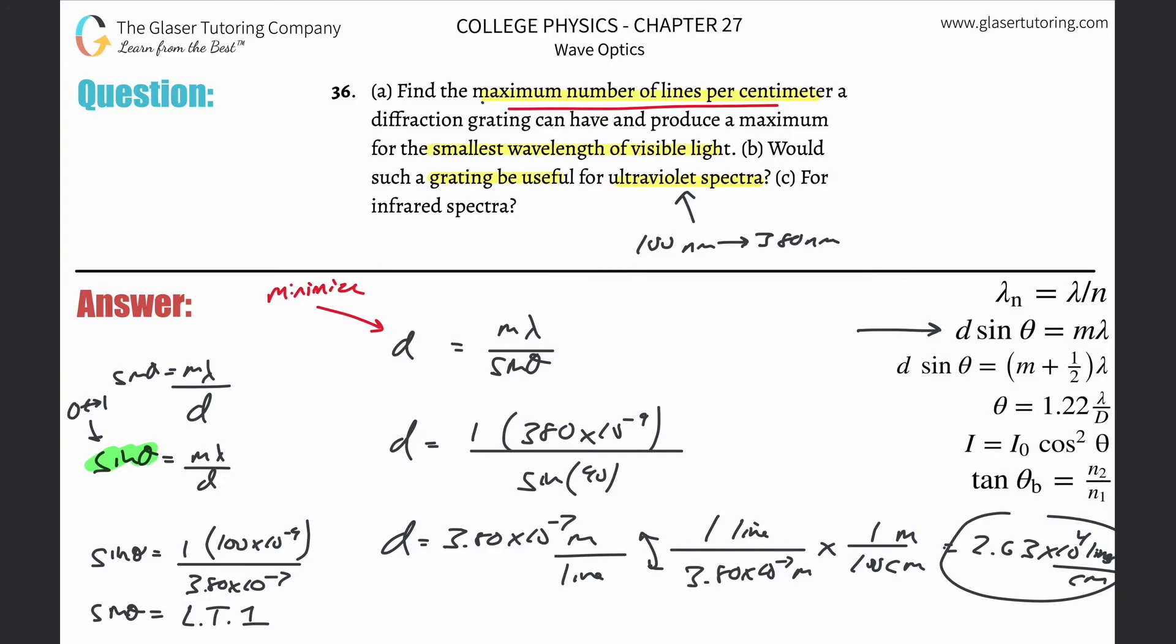Then what I'm going to do is I'm going to now take the maximum value of 380. Get rid of this—it's now 3.80 times 10 to the minus ninth. Or excuse me, it's not 3.80, it's 380 because this is times 10 to the minus ninth.